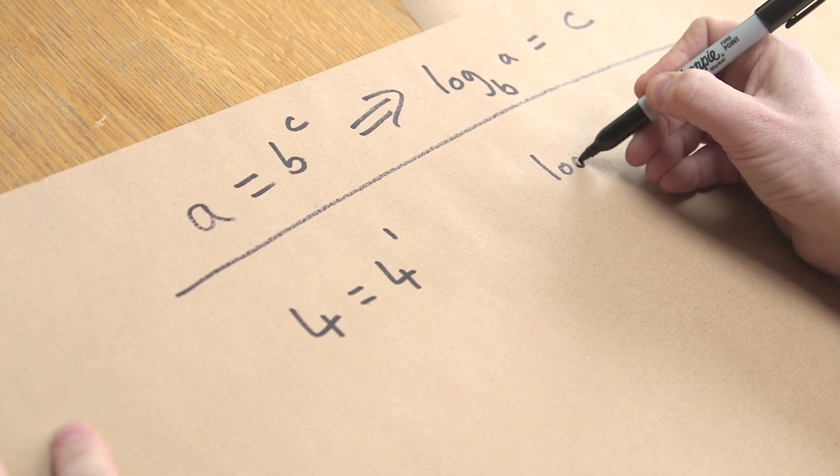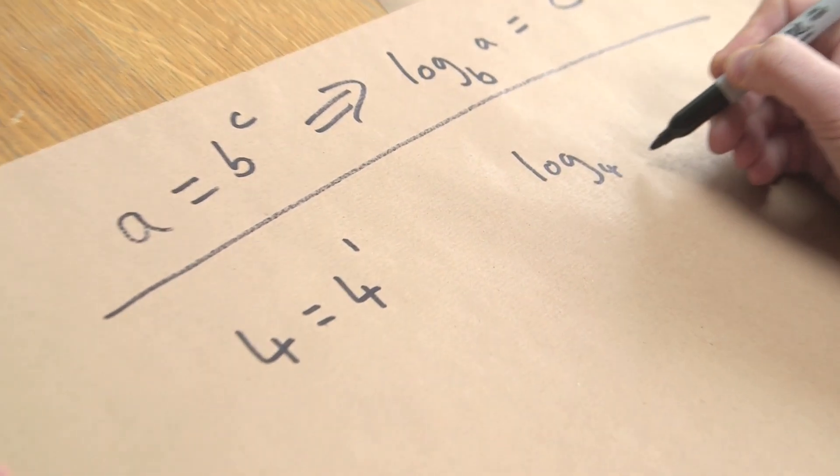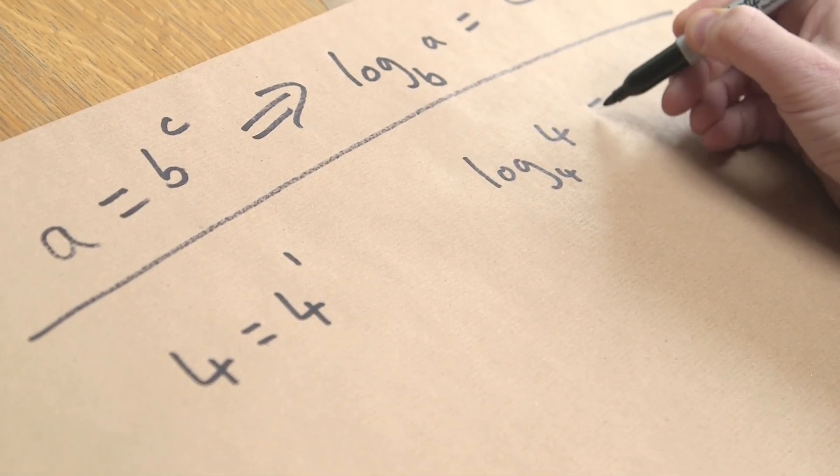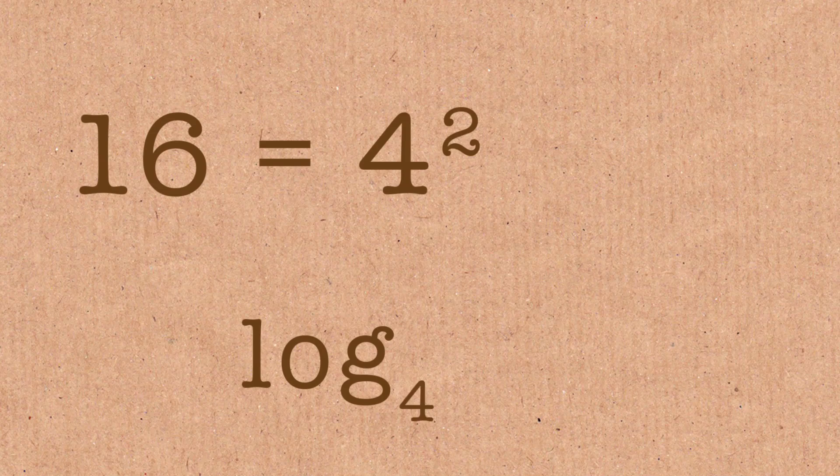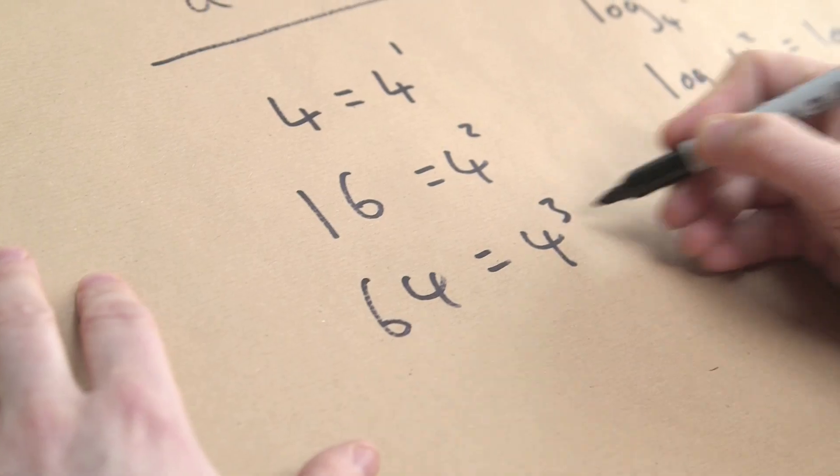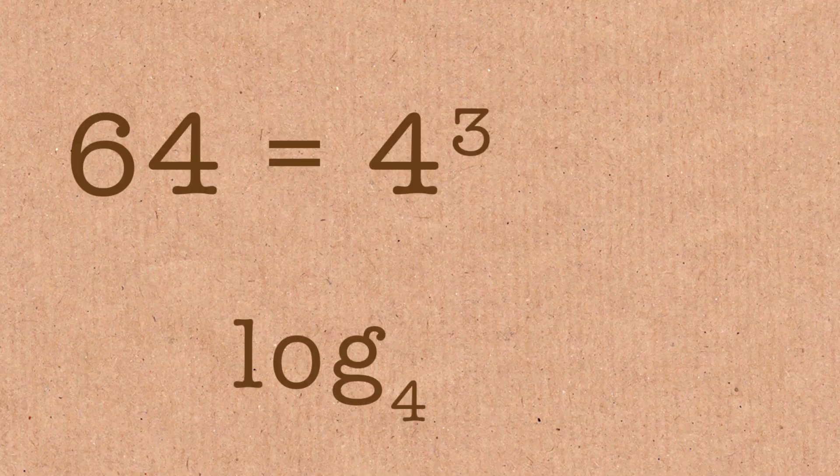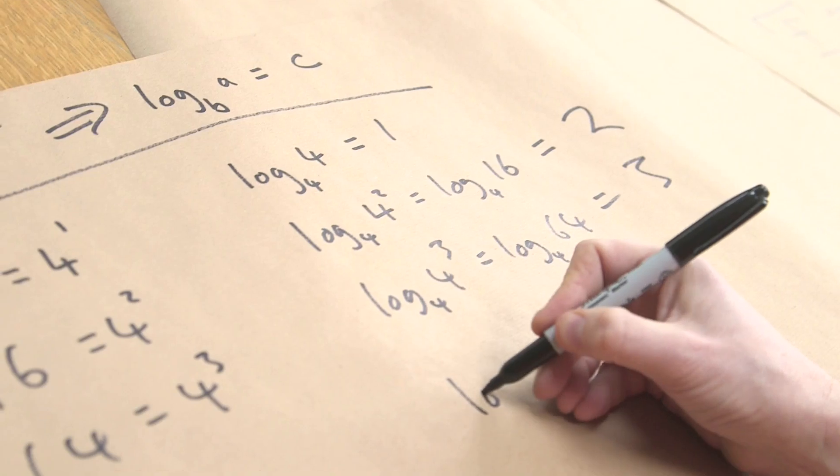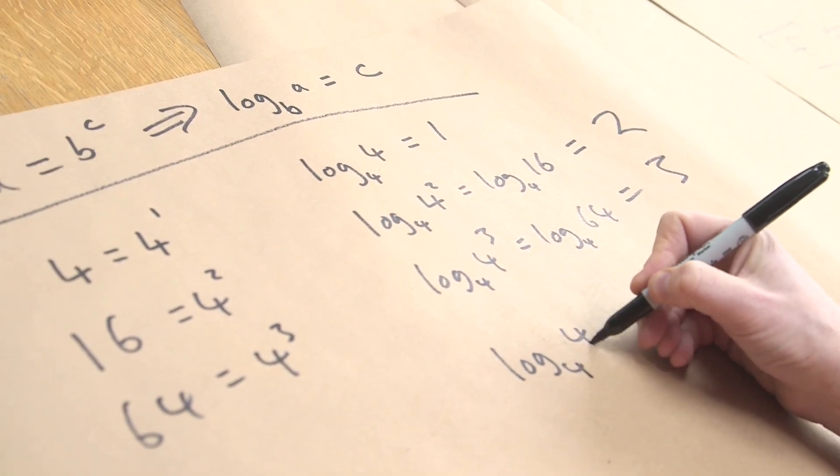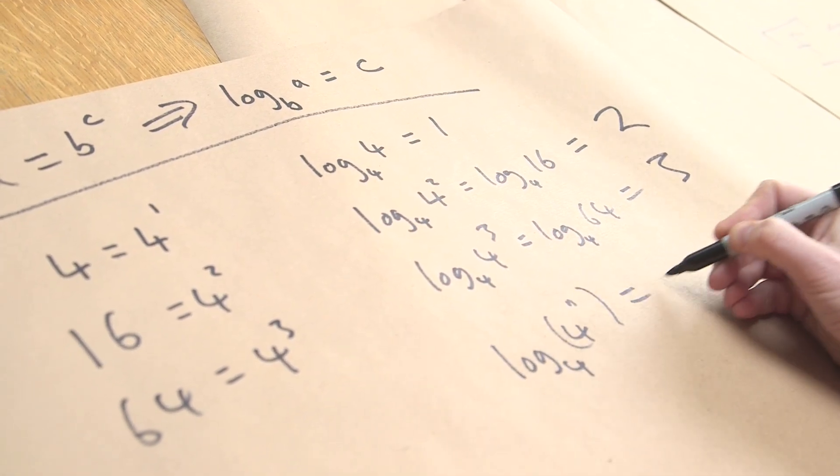16 is 4 squared. So the log to the base 4 of 16 equals 2. 64 equals 4 cubed. So log base 4, 64 equals 3. But can you see there's a pattern here? Basically log the base 4 of 4 to the n equals n.